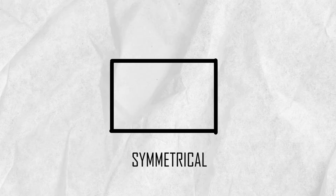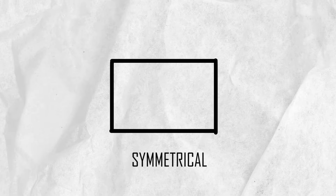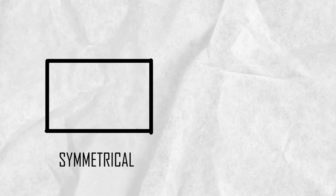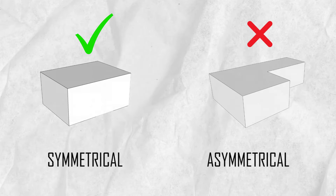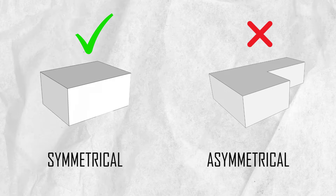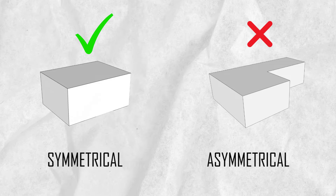Buildings which are symmetrical in plan and regular in elevation are safer than asymmetrical ones, so avoid using asymmetrical shapes for buildings. When it is not possible to have regular shapes, it is possible to improve the earthquake resistance by dividing the building into several parts.